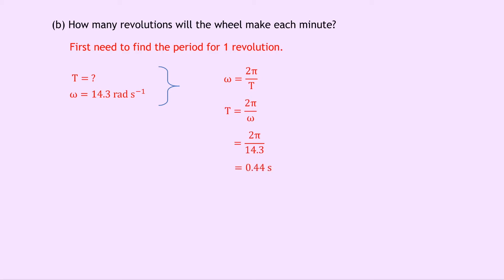So that is the time taken for the wheel to make one complete revolution. So if we want to find how many revolutions happen in one minute, then we need to take 60 seconds and divide it by that period of 0.44 seconds. So we get number of revolutions per minute equals 60 divided by 0.44, which gives us an answer of 136.4. So it's just a number, no units, and if you wanted to, you could round it to just a full 136 revolutions.